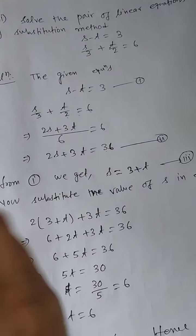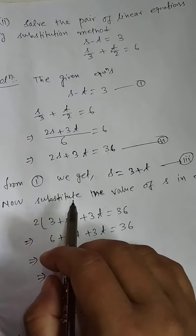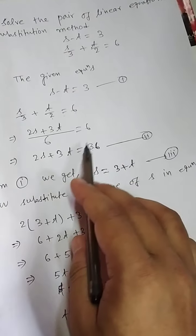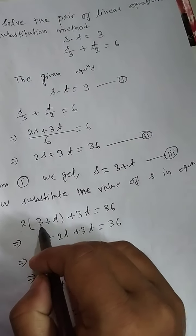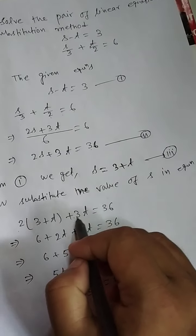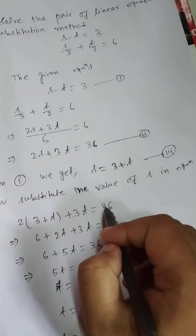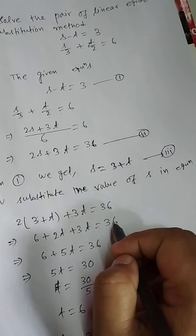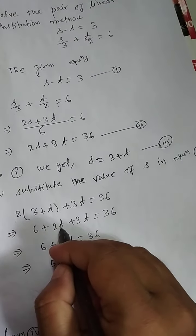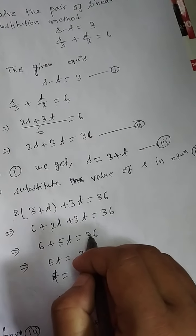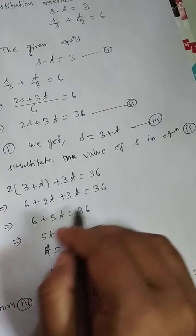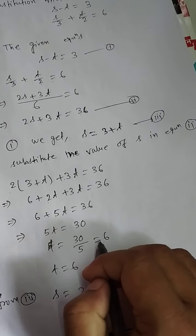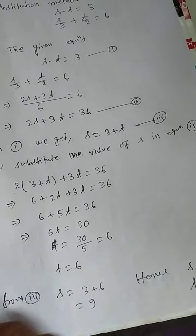From equation number 1 we get s equals 3 plus t — this is equation number 3. Substituting the value of s in equation number 2: 2 into (3 plus t) plus 3t equals 36, so 6 plus 2t plus 3t equals 36, giving 5t equals 30, therefore t equals 6.